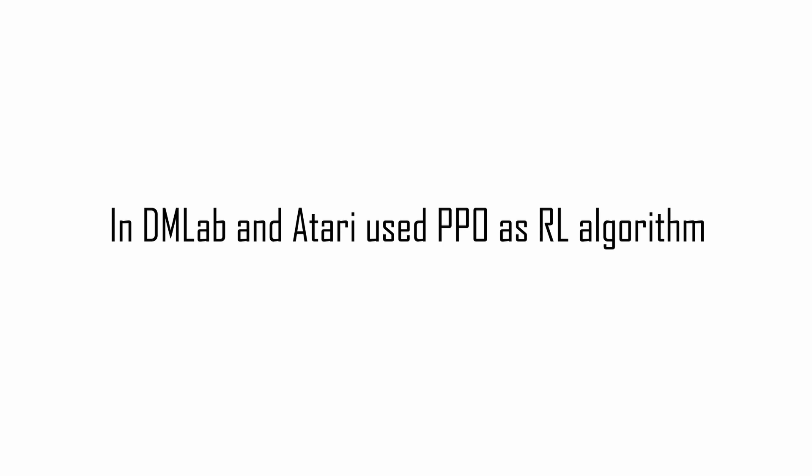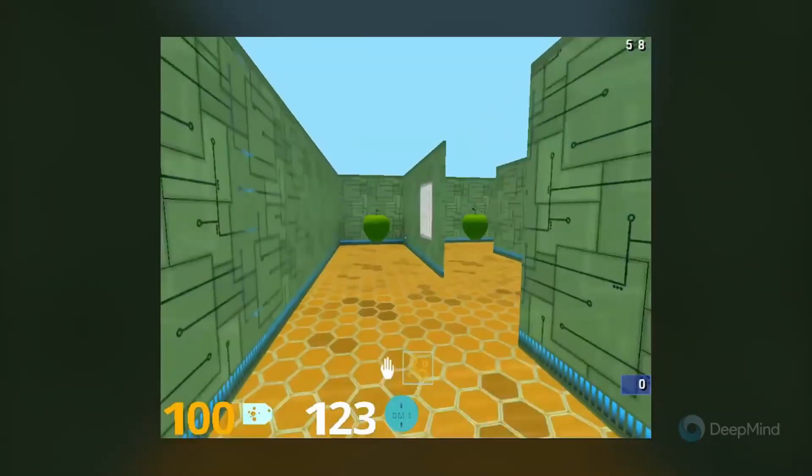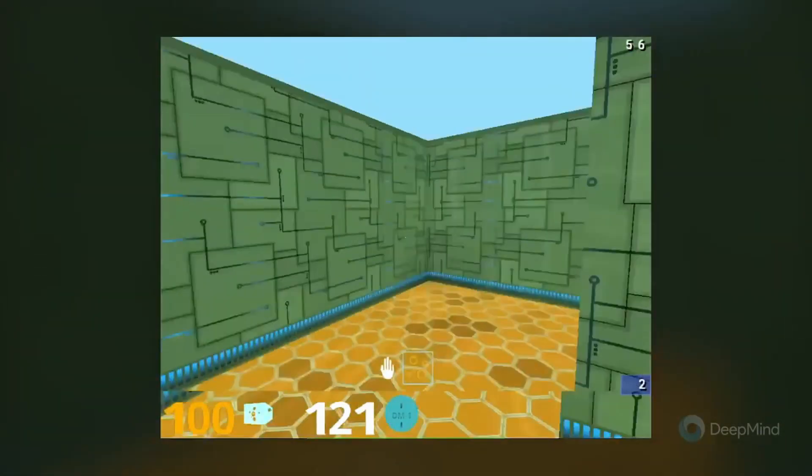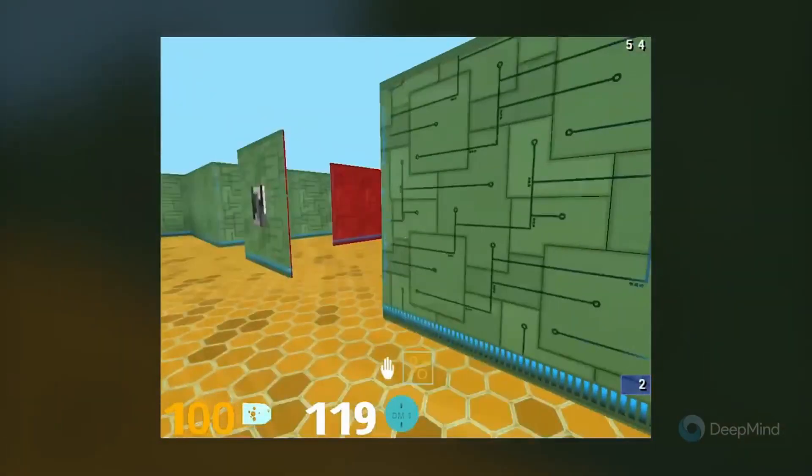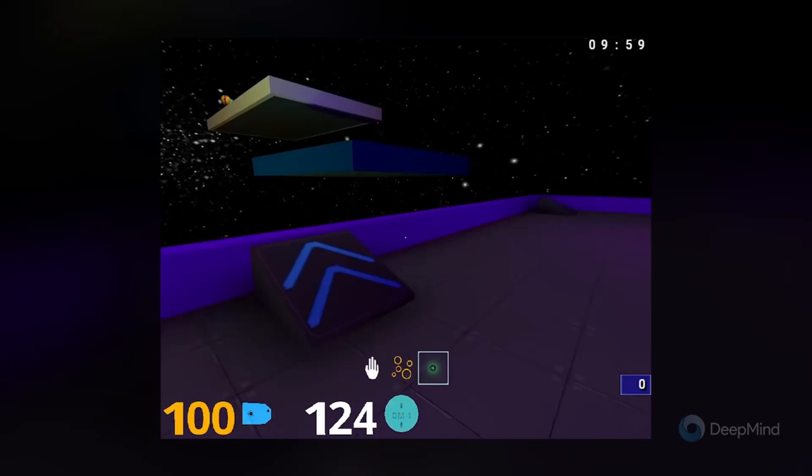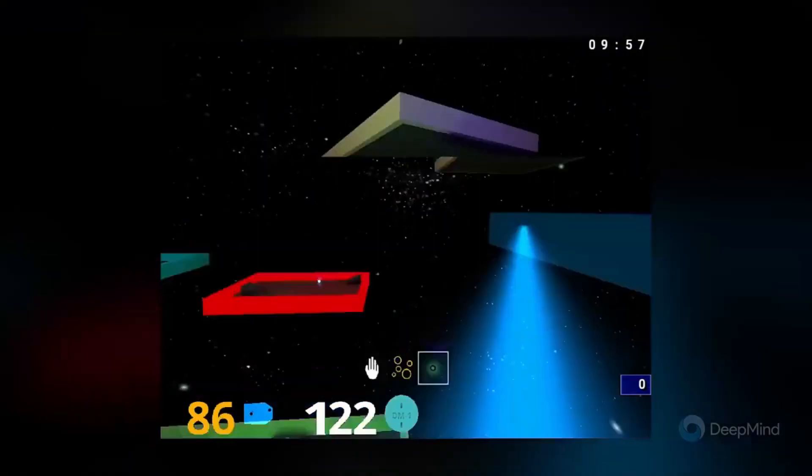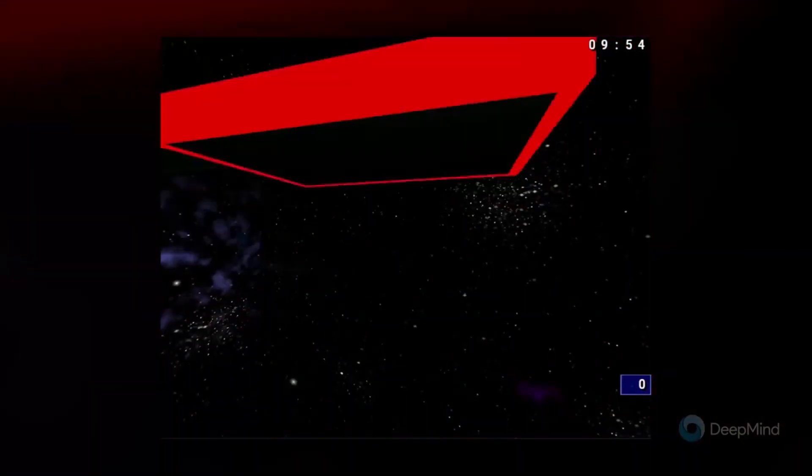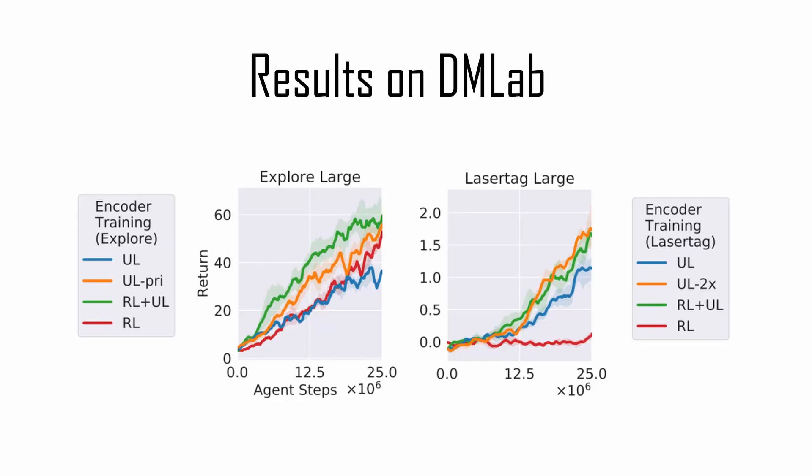In DM Lab, as well as in Atari, they use PPO for their reinforcement learning algorithm, and on DM Lab, they experimented with two environments, Explore, which task is to navigate randomly generated images, and LaserTag, which requires fast reflexes to pursue enemies. You can see that in LaserTag, the difference is substantial, probably because of the richness of the environment, and the difficulty in reaching the reward.